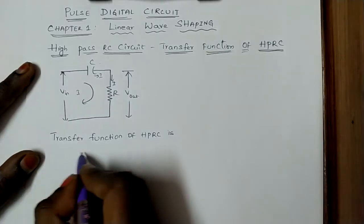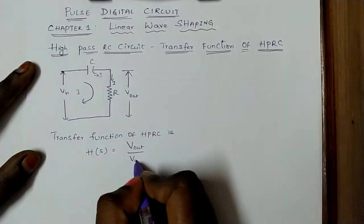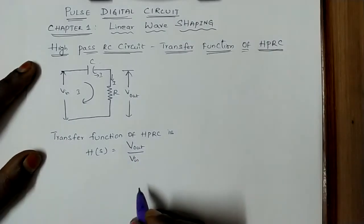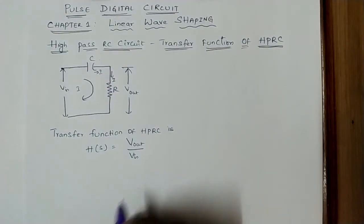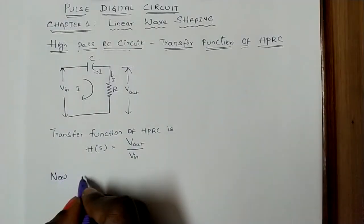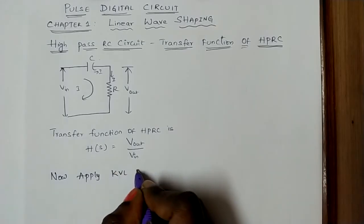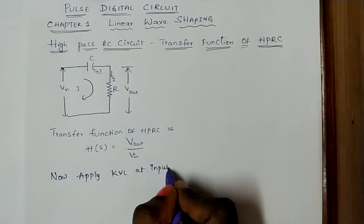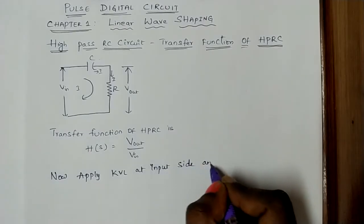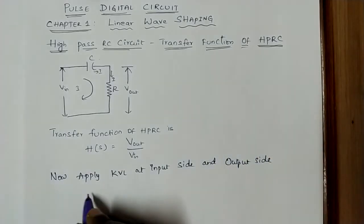The transfer function of the HP RC circuit is H(s) equal to V_output divided by V_input. Now we have to find out the output by input equations. To do so, we apply KVL at both the input side and the output side.